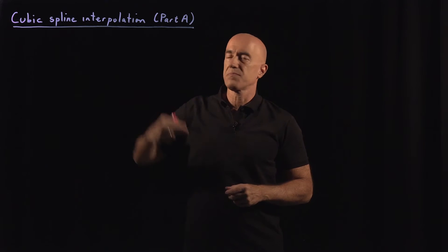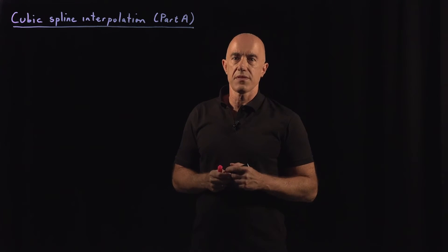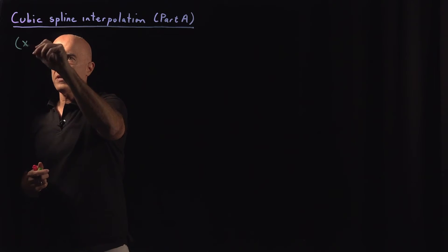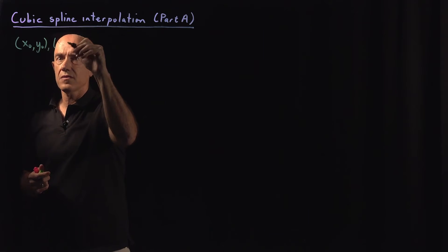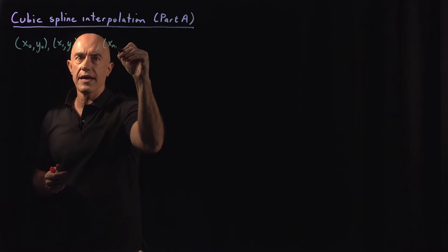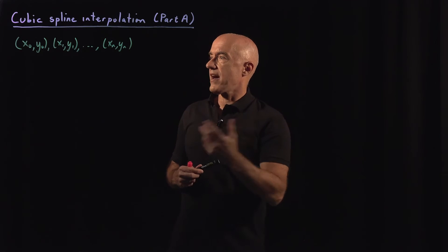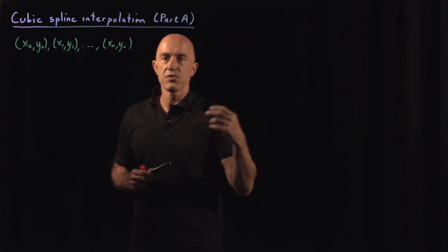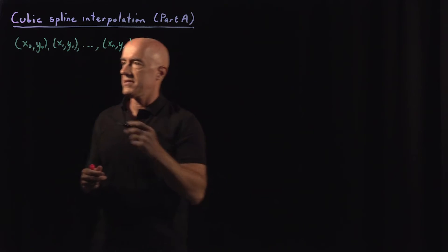That goes by the name cubic spline interpolation. So let me set up the problem in the same way as before. We know the values at certain points: x0, y0, x1, y1, say, to xn, yn. So at n plus 1 points, n plus 1 values of x, we know the values of y. And we want to interpolate — we want to find the values of y at some x not on this list.